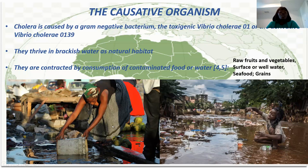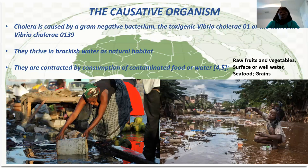Cholera can affect a lot of things. Most times it happens where people don't have access to clean water to drink, and where they go to get water from the stream. Sometimes that water is infected. Someone can contract the disease by consumption of contaminated food or water. The food can be fruits, vegetables, sewage-contaminated water, seafood, and grains.